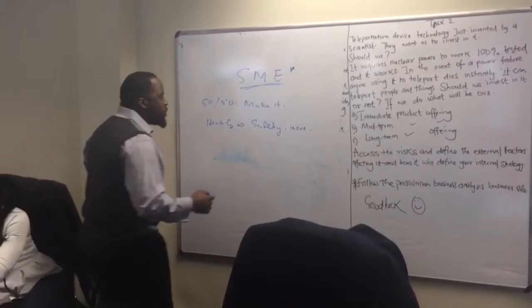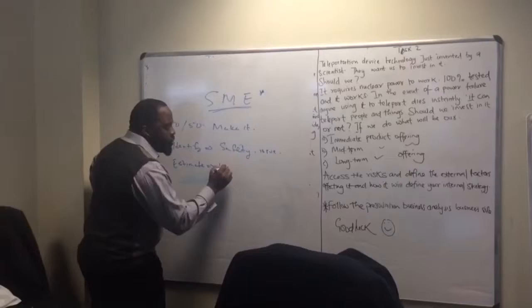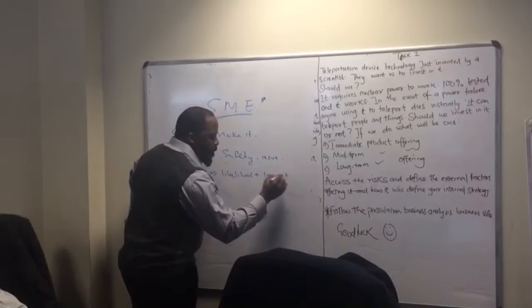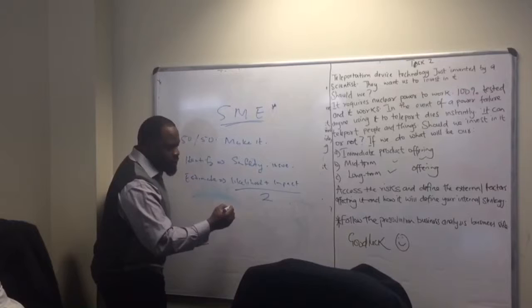So let us estimate it. Estimation looks at likelihood plus impact divided by 2. So what's the likelihood that we will make it? 50%.